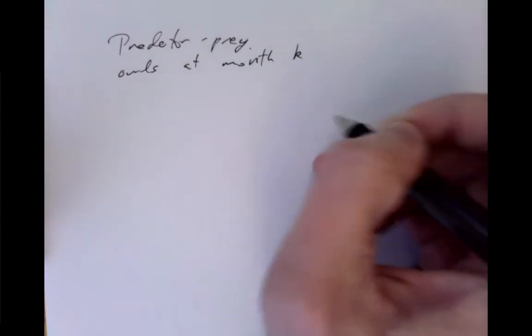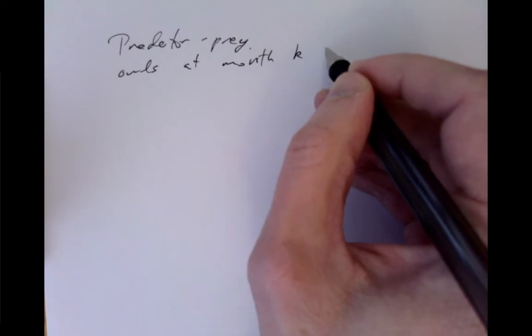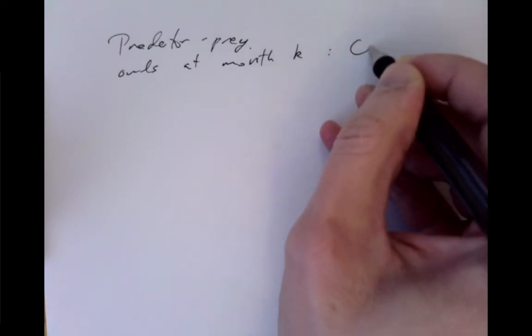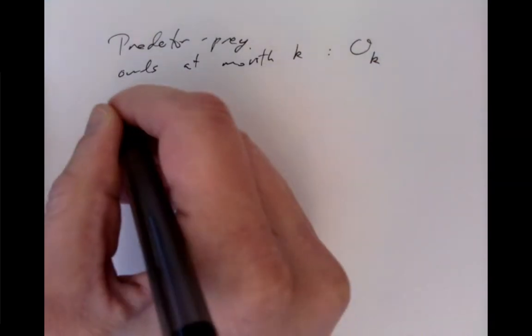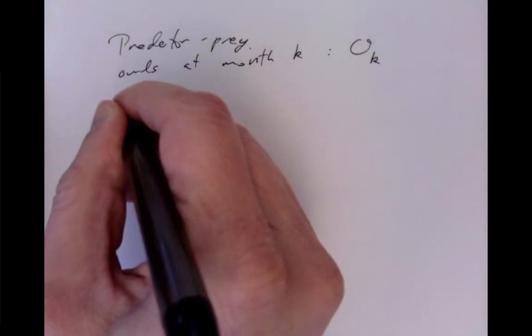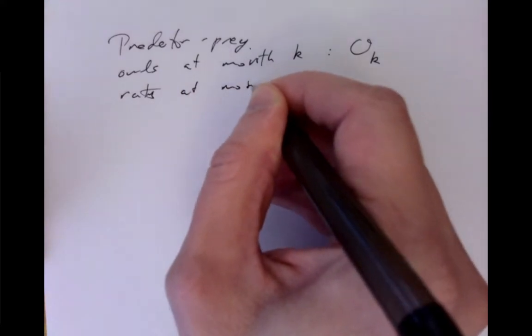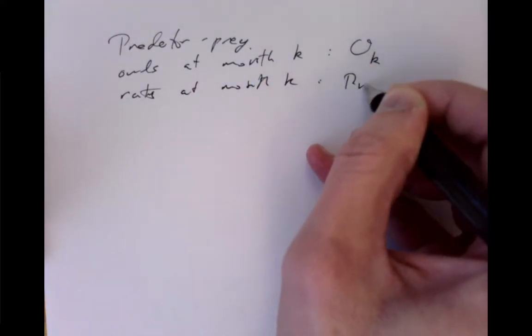So, owls at month k. So we'll measure time in months, and the months will be 1, 2, 3, and so on, starting from some initial month. So the owls at month k should be given by number O_k, and the rats at month k are R_k.